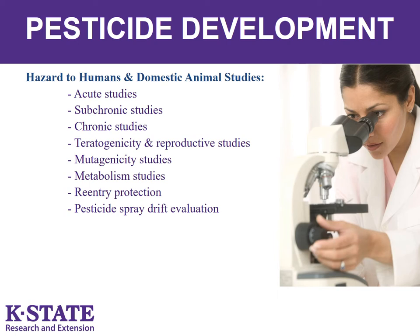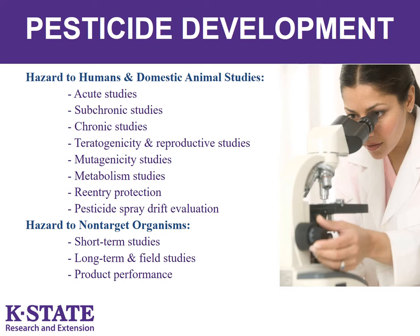The company must also develop risk assessments that evaluate the potential for harm to humans as well as wildlife, fish, plants, including endangered species and non-target organisms, as well as contamination of surface water or groundwater from leaching, runoff, and spray drift. Potential human risks range from short-term toxicity to long-term effects such as cancer and reproductive system disorders. The company must also evaluate the language that appears on each pesticide label to ensure the directions for use and safety measures are appropriate to any potential risk.